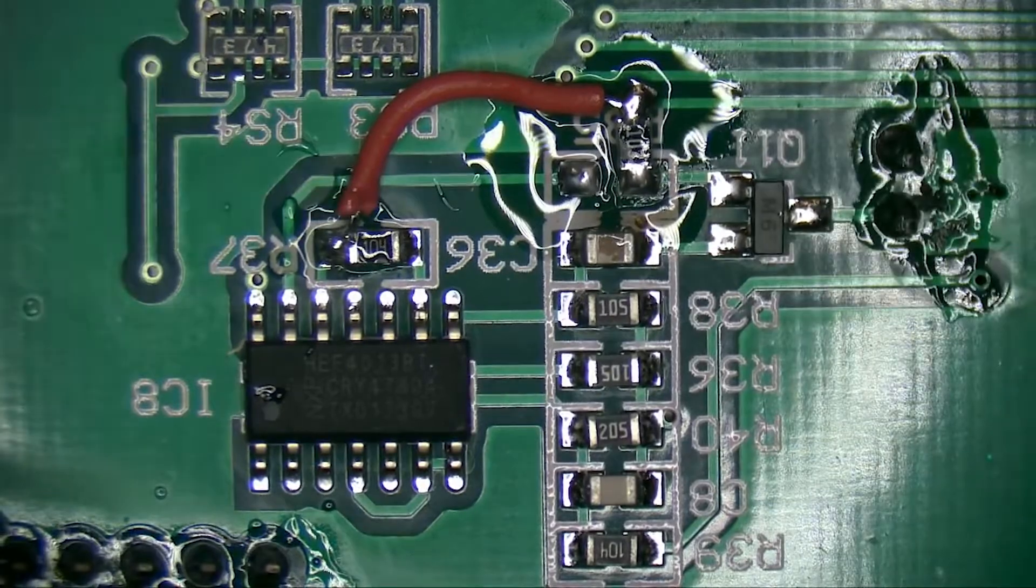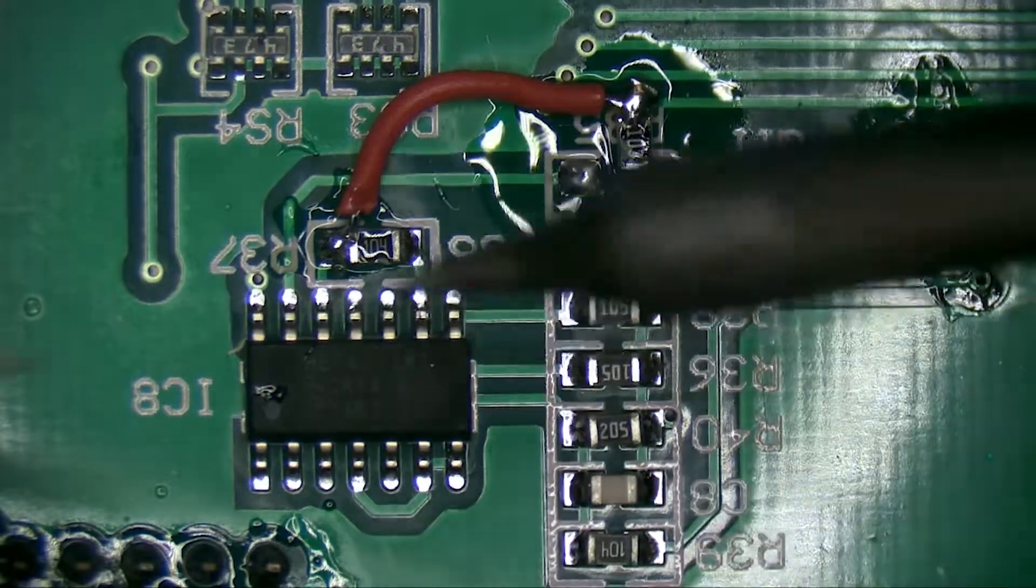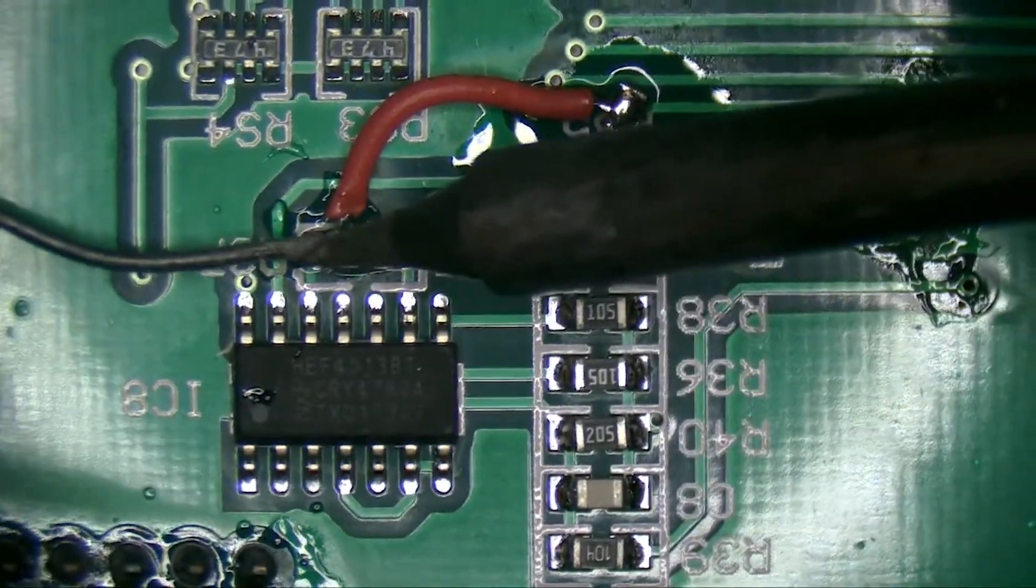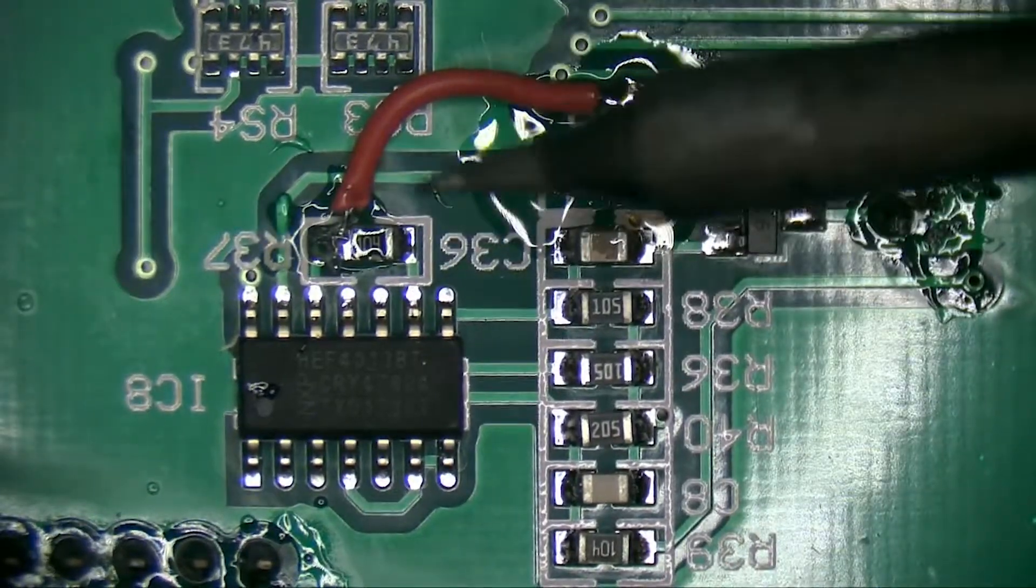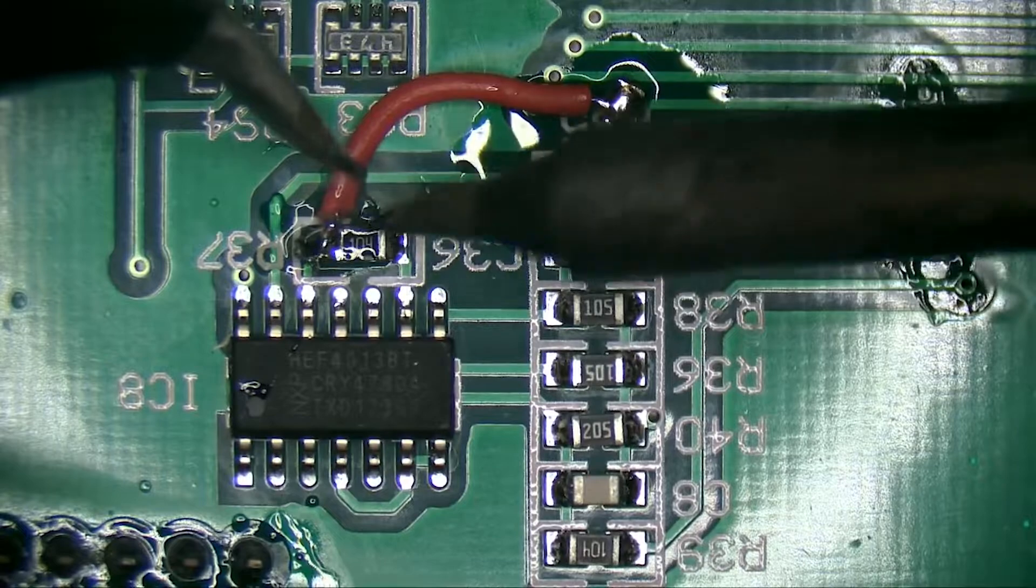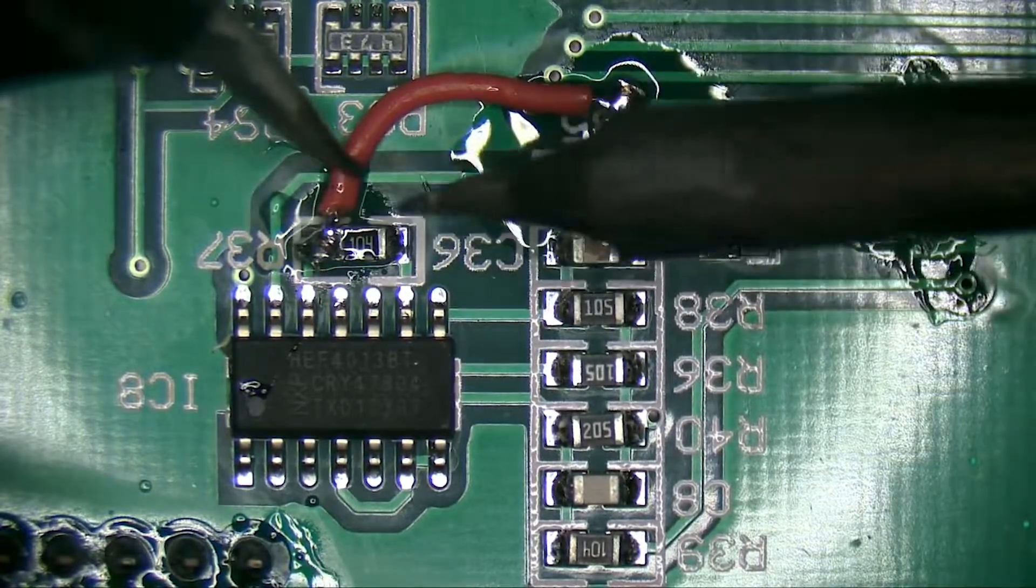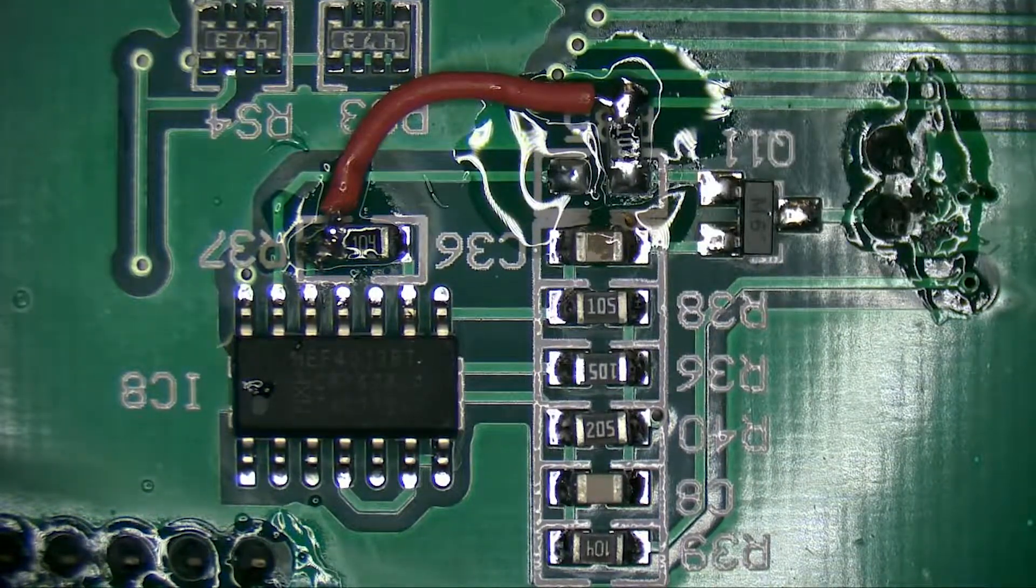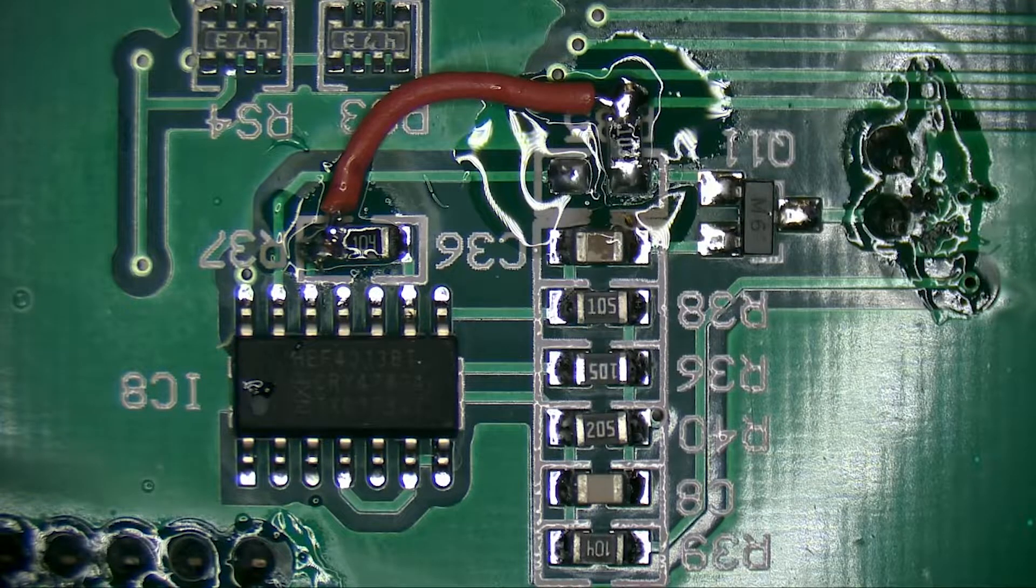And we're going to wire it to this side of the resistor, and add some more solder to that. There we go, just like that. Just going to clean that up.